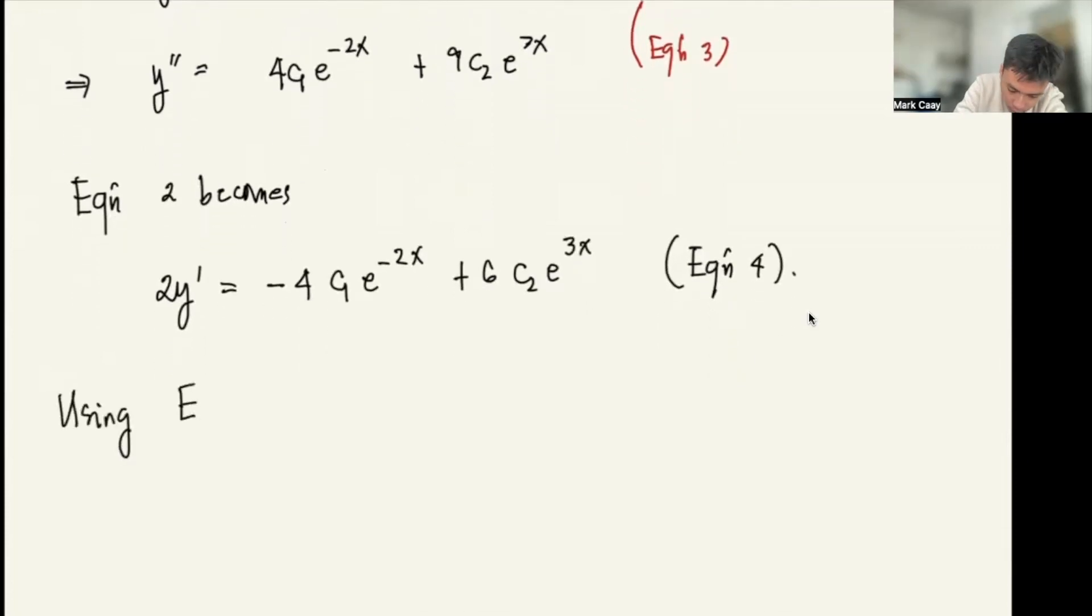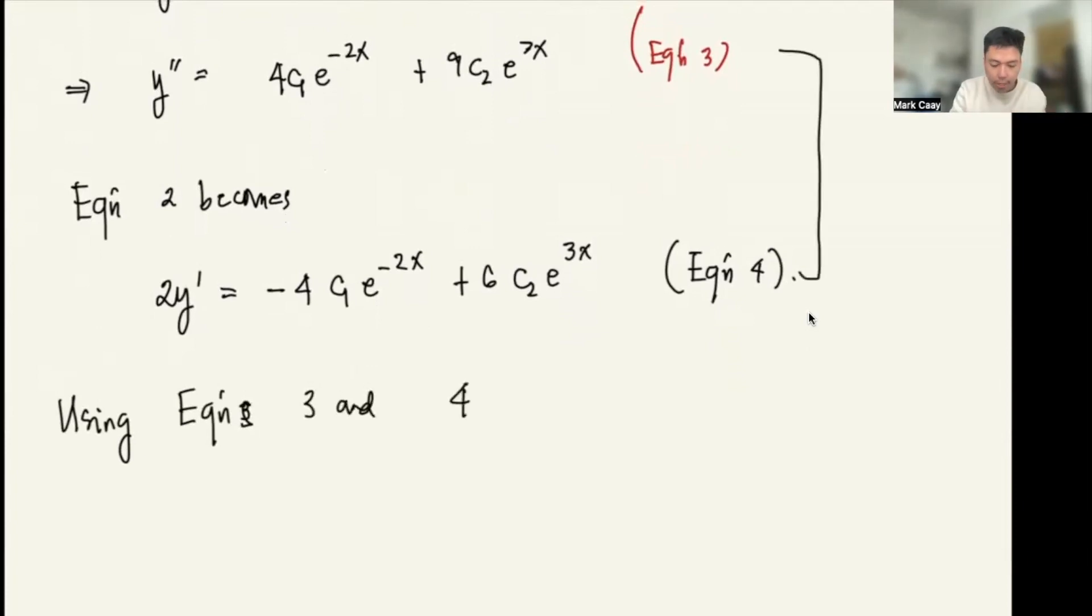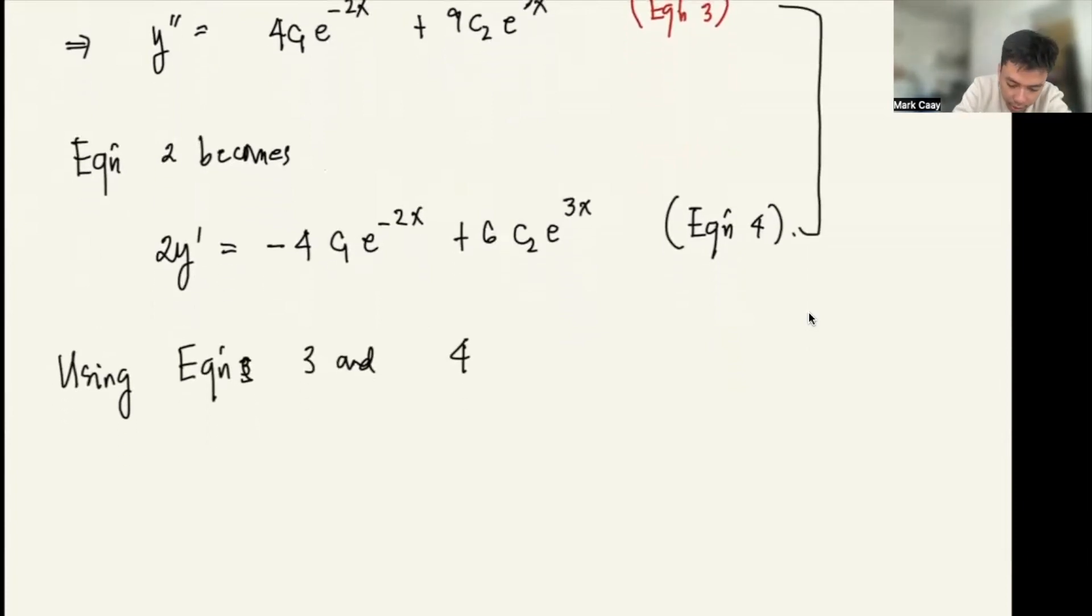So using equations 3 and 4, I'll add them. So that's y double prime plus 2y prime equals - when I add these, this cancels - I have 15c2 e to the 3x, because 9 plus 6 equals 15.